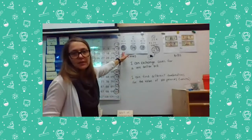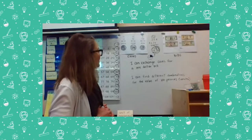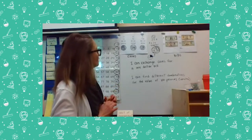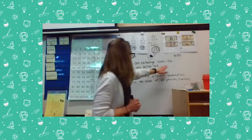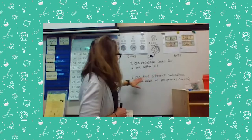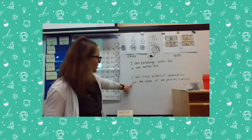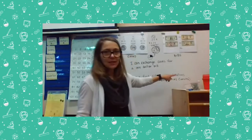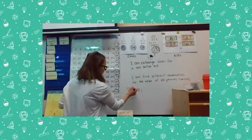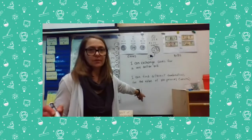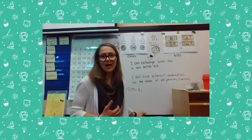The penny is the one that is copper — it's the darker one — and all the others are silver. Now let's move on to the I can statements. I can exchange coins for a one dollar bill, and it goes the other way as well — you can exchange a one dollar bill for coins. I can find different combinations for the value of a hundred pennies, or a hundred cents. A hundred pennies equals one dollar. A hundred cents equals one dollar. And that leads right into our game — the one dollar exchange game.